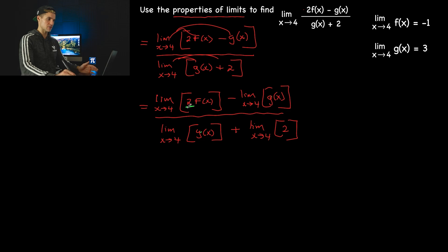So what I'm going to do is I'm going to take that constant out, so let's put a 2 there, and then I'll have the limit as x approaches 4 of f(x), like that. So the limit stays with the f(x), but the 2 we took out, and then we have minus the limit as x approaches 4 of g(x).